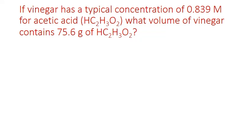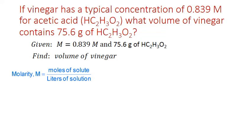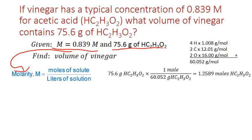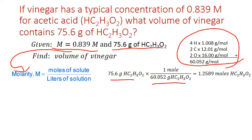Here's another example where we solve for the volume of solution containing a given amount of solute. If vinegar has a typical concentration of 0.839 moles per liter for acetic acid, what volume of vinegar contains 75.6 grams of acetic acid? We're given molarity and mass, and we need to find volume. The amount of solute is in grams, so we must convert to moles by dividing by the molar mass of acetic acid, which is 60.052 grams per mole.